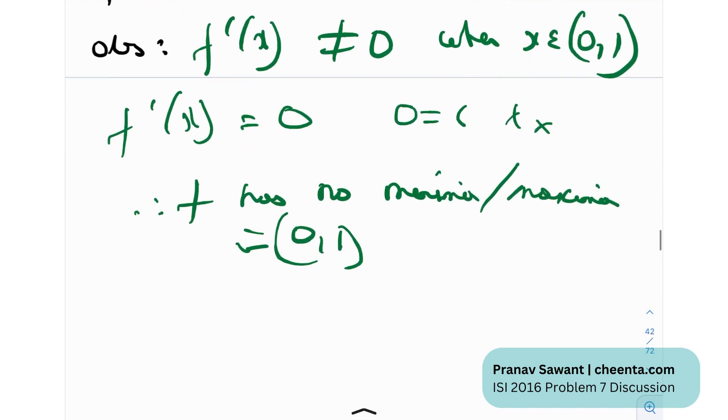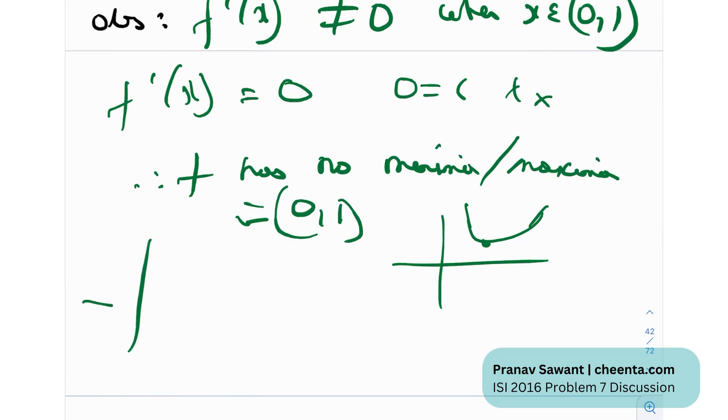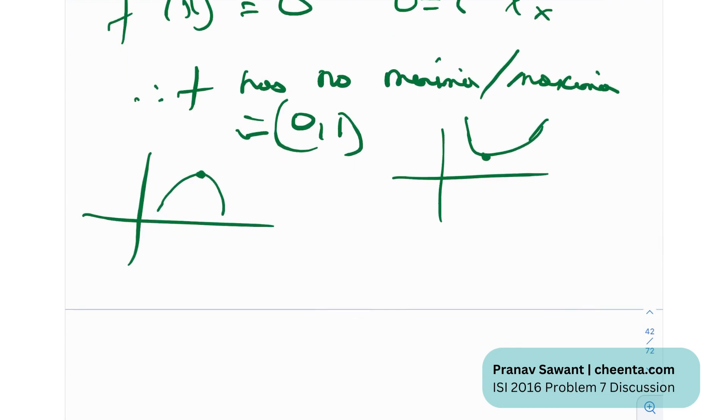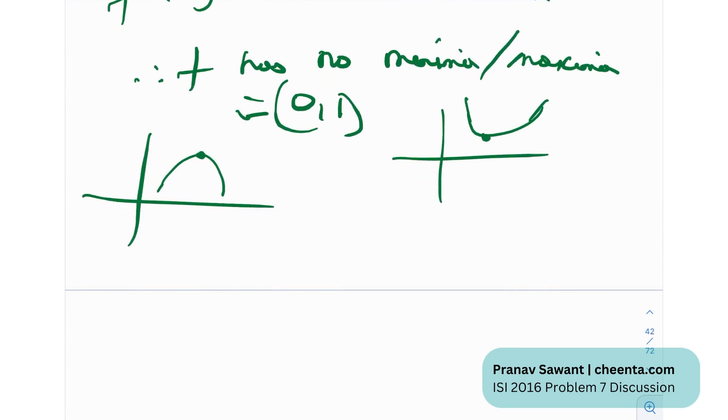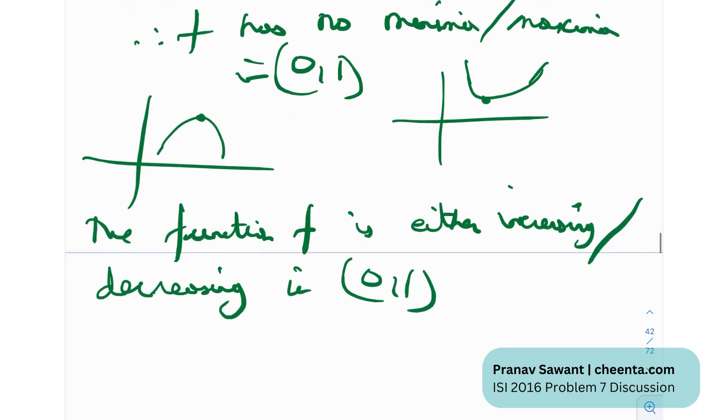If it does not have a minima or maxima, what does that mean? For example, if we have a function like this, this definitely has a minima, or if we have a downward opening parabola, this definitely has a maxima. But if a function does not have any minima or maxima, then what can we say? The function f is either completely decreasing or completely increasing - there is no minima maxima, there is no point of change of the value of the tangent. So the function f is either increasing or decreasing in [0,1], which is why the function is monotonic. Therefore f is monotonic.